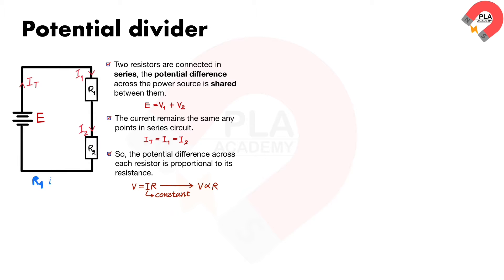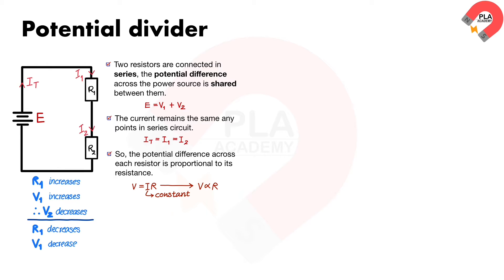If the resistance of R1 is increased, it will get a greater share of the potential difference, whilst R2 will get a smaller share. If the resistance of R1 is decreased, it will get a smaller share of the potential difference, whilst R2 will get a greater share. This gives the ratio: R1 over R2 equals V1 over V2.